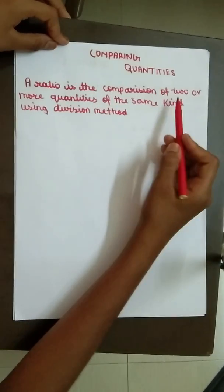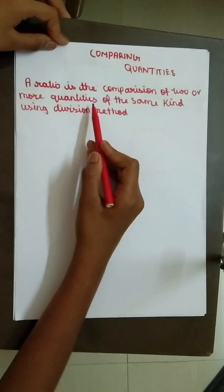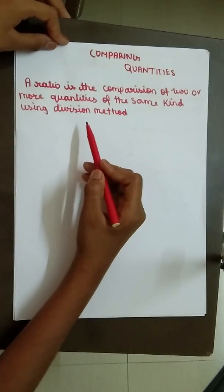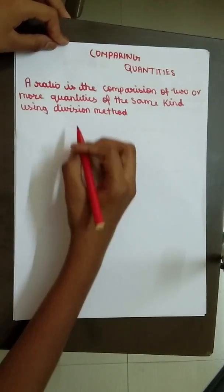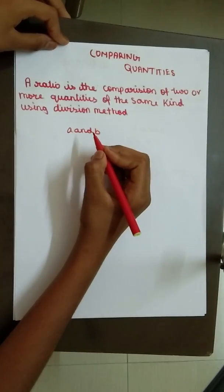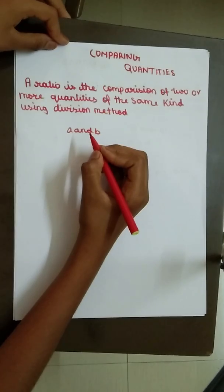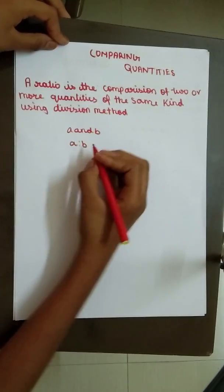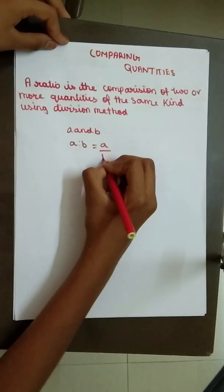A ratio is the comparison of two or more quantities of the same kind using division method. The ratio of two quantities A and B of the kind in the same unit is written generally as A is to B.